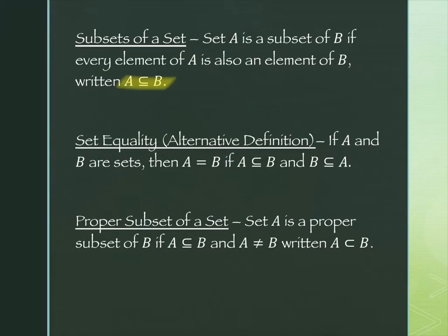Set equality: two sets are equal if they contain exactly the same elements. An alternate definition is that if A and B are sets, A equals B if A is a subset of B and B is a subset of A. The only way both containments work simultaneously is if that equals on the bottom is what's actually going on — every element of A must be in B and every element of B must be in A.